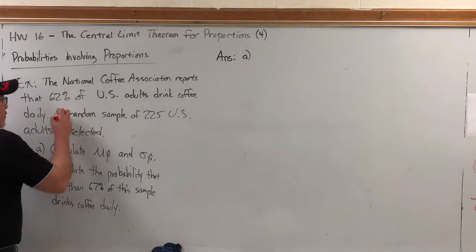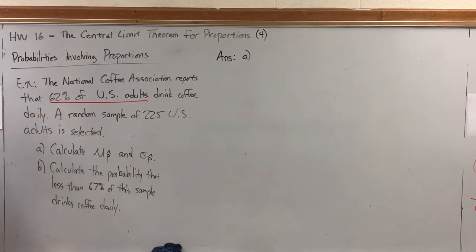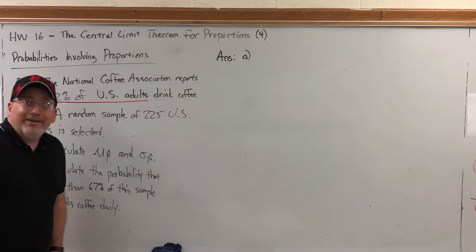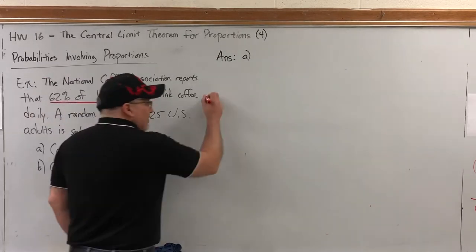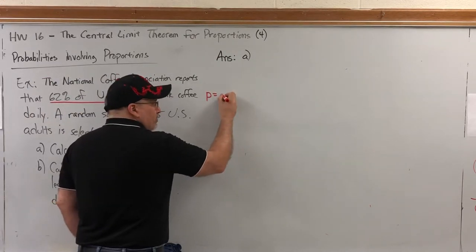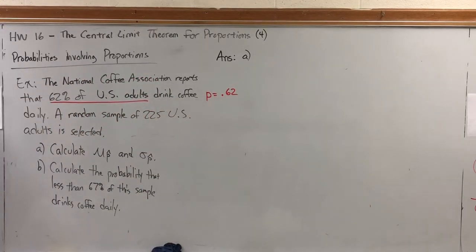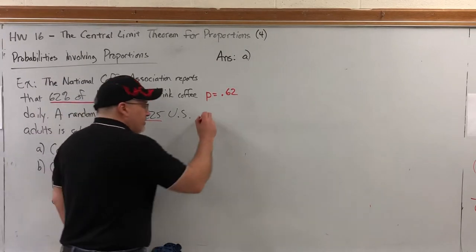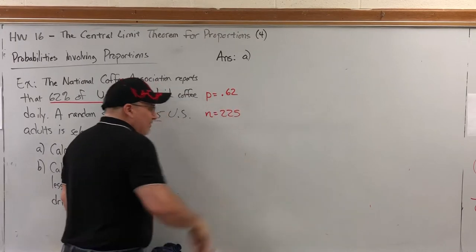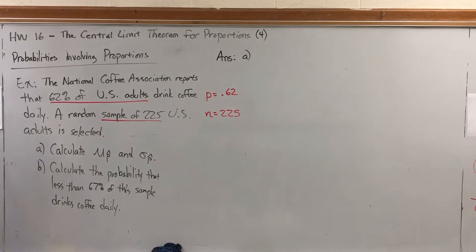For example, when we say that 62% of U.S. adults drink coffee, we are saying a percent of a population that has a characteristic. Since it's the percent of a population, that's P. P-hat is the percent of a sample. This is the percent of a population. We're being told that P is equal to 62% or 0.62. What about the 225? That's just sample size, that's lowercase n. So it's important at the outset of any word problem to identify the variables that the given values represent.